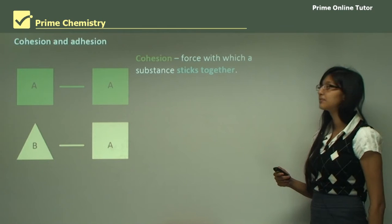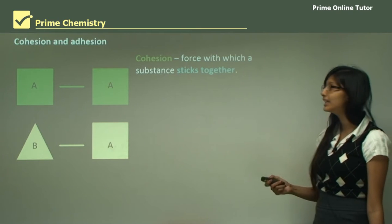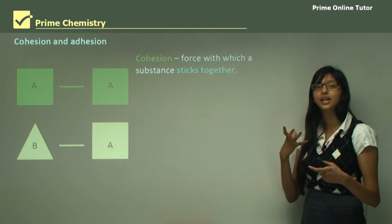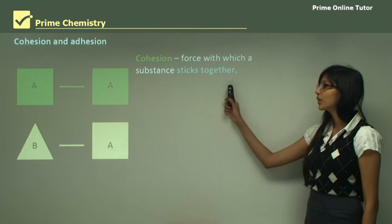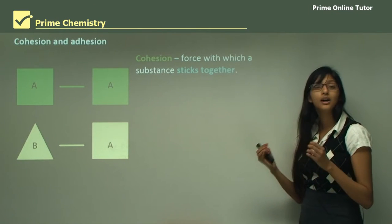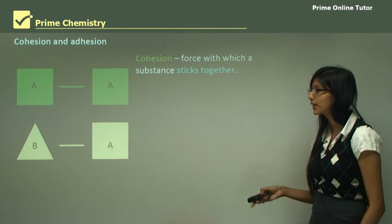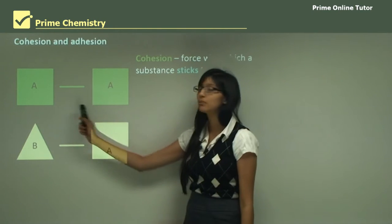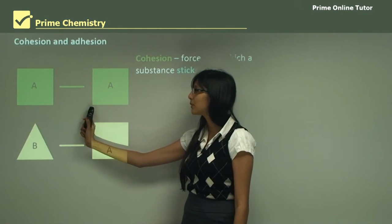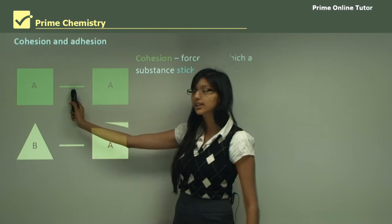Now let's look at the forces cohesion and adhesion. Cohesion is the force with which a substance sticks together. The cohesive force exists between the water molecules — it remains between two like molecules. For example, if both molecules are the same, represented by the same color and symbol, the force between these two identical molecules is the cohesive force.